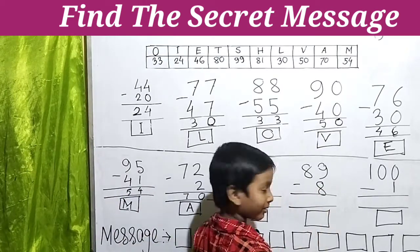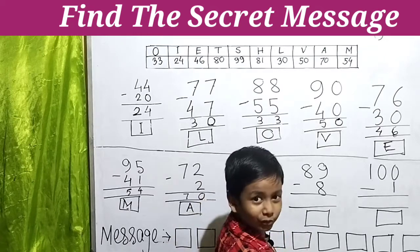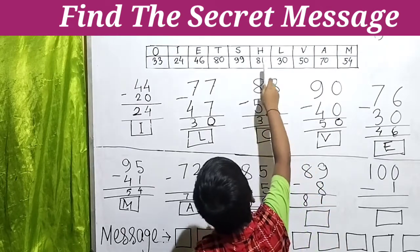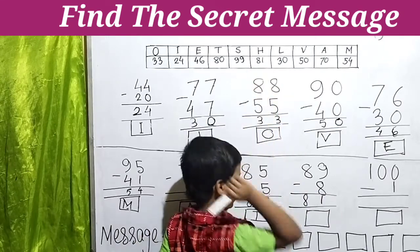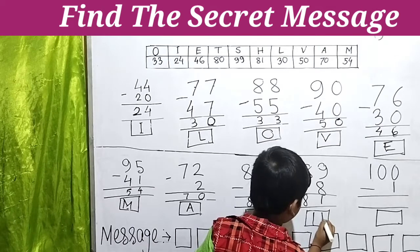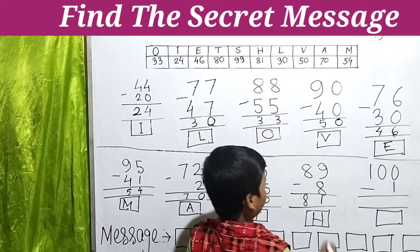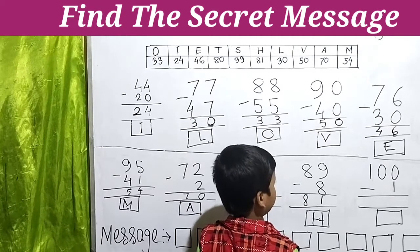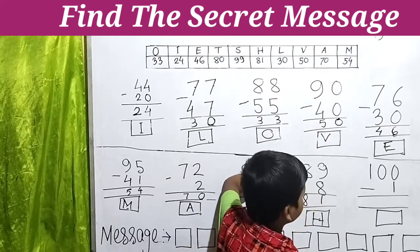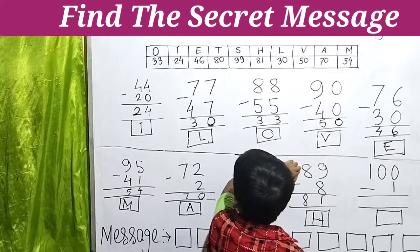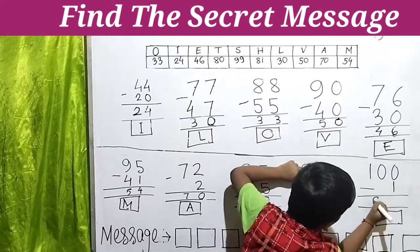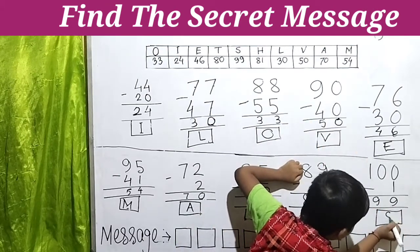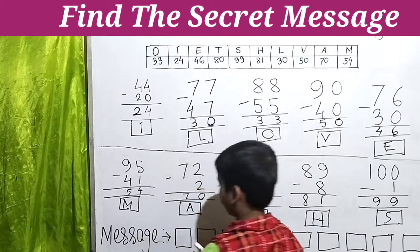Next, 89 minus 8. 9 minus 8 equals 1, we write 1. Then 8. So the answer is 81, and 81 means H. We write H here. Then 100 minus 1 — wow, that's not easy! 100 minus 1 is 99. 99 means S.